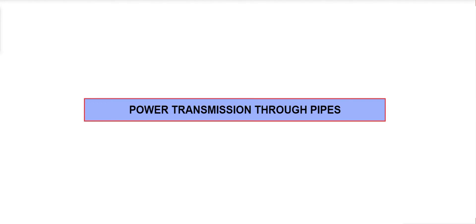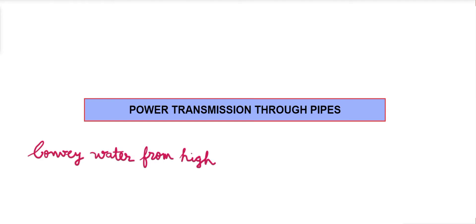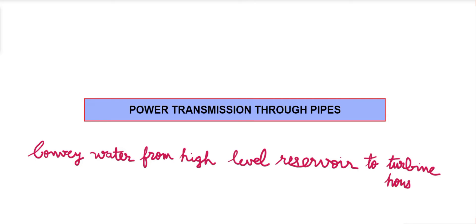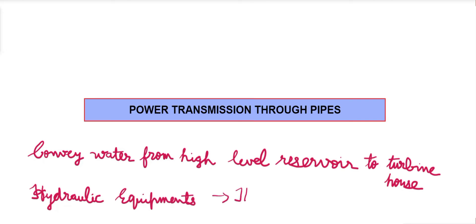Why are we using power transmission? One use is to convey the water from a high-level reservoir to a turbine house. It can also be used in the operation of hydraulic equipment, such as hydraulic press, crane jack, etc. These are the uses of power transmission through pipes.